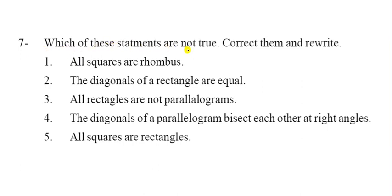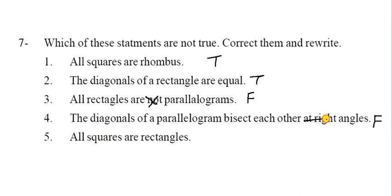Question 7: which of these statements are not true? All squares are rhombuses — true. The diagonals of rectangles are equal — true. Rectangles are not parallelograms — false, rectangles are parallelograms. The diagonals of a parallelogram bisect each other at right angles — false; they only bisect each other, not necessarily at right angles. All squares are rectangles — true.